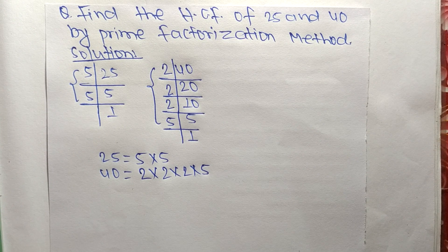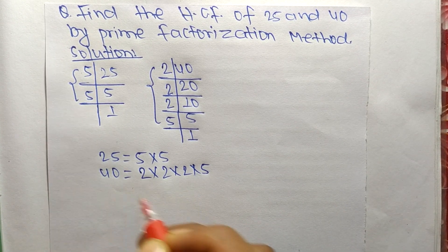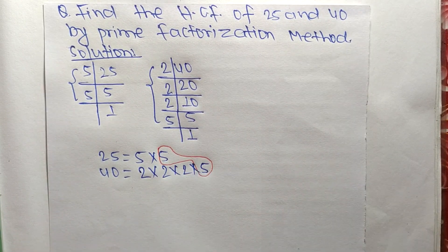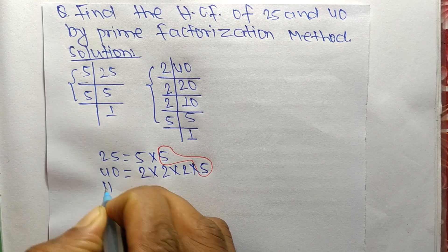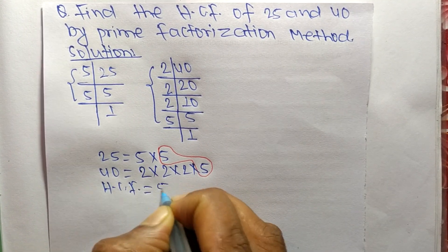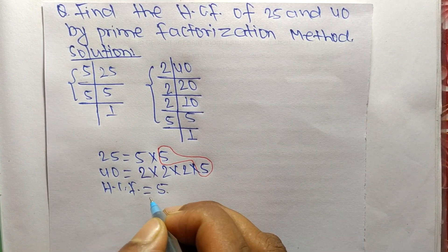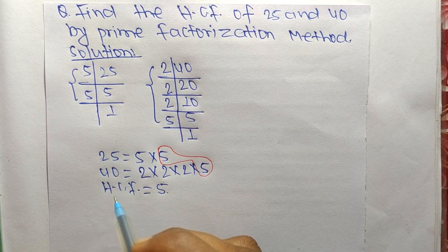The only common factor here is 5, so the HCF is equal to 5. Therefore, 5 is the HCF of 25 and 40.